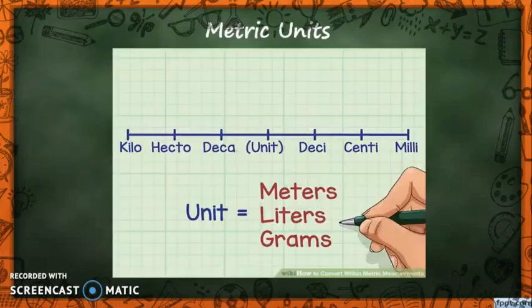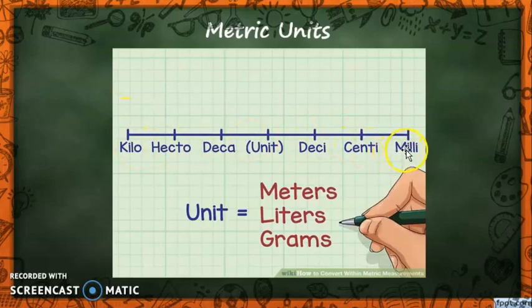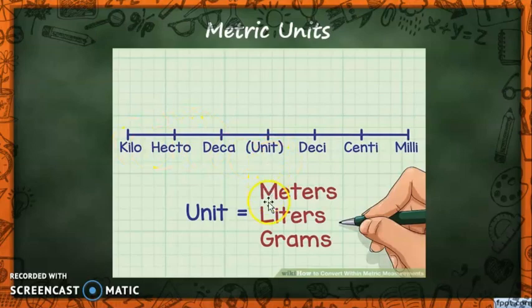In order for any conversion to take place, we need our metric units. Here we have our metric line ranging from milli to kilo: milli, centi, deci, deca, hecto, kilo. Our units are interchangeable — we could use meters, liters, or grams.